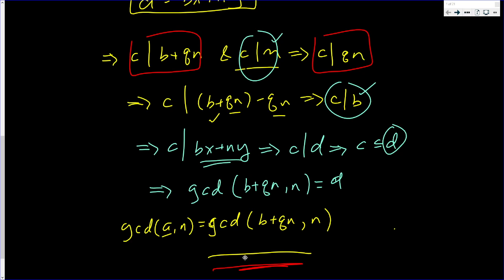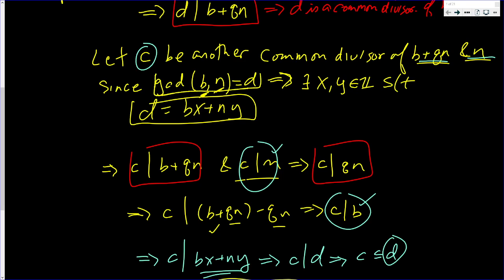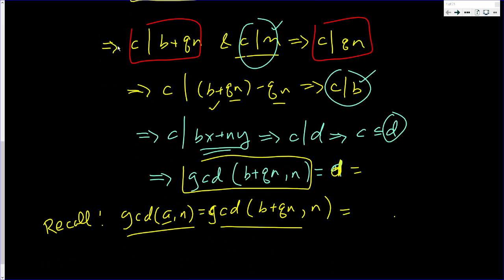What we can say here is recall that this equals that. But we just showed that this is equal to D. It is equal to D. But what was D? D, by definition, was the GCD of B and N. This is equal to the GCD of B and N. The GCD of A and N and the GCD of B and N are the same.